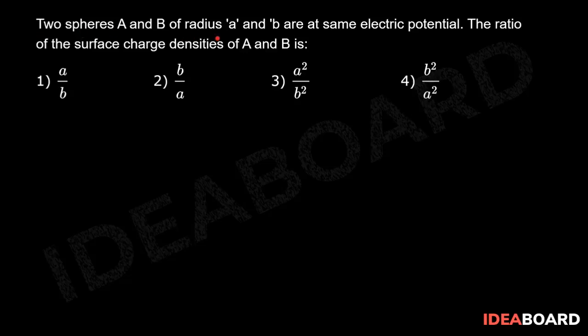Two spheres A and B of radius a and small b are at same electric potential. The ratio of the surface charge densities of A and B is: